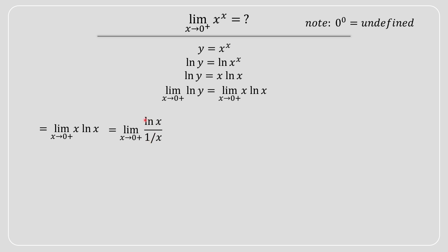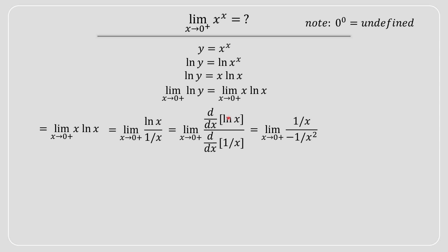We apply L'Hôpital's rule by taking the derivative of the numerator and the derivative of the denominator. In the numerator, the derivative of ln(x) is 1/x, and in the denominator the derivative of 1/x is negative 1/x².